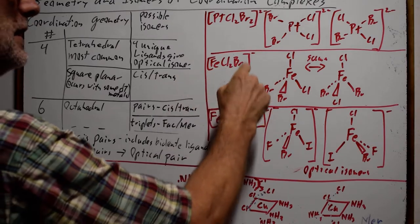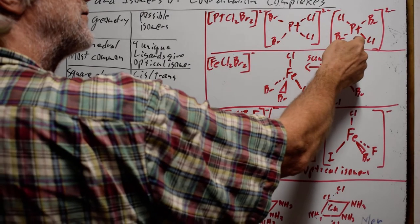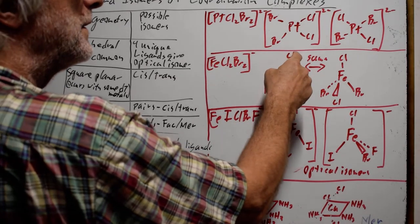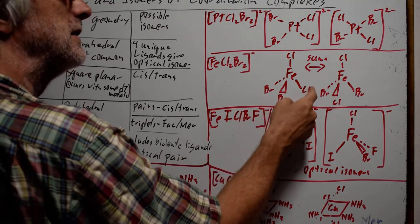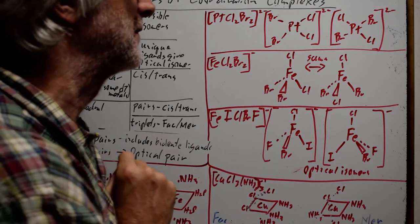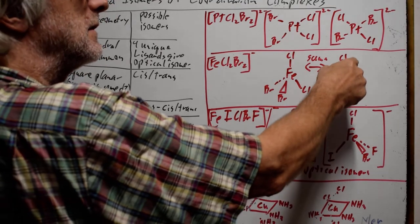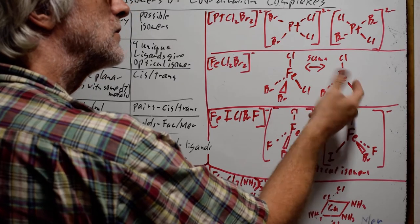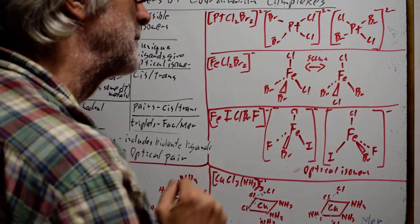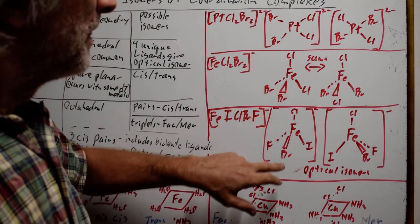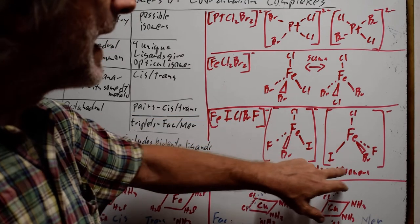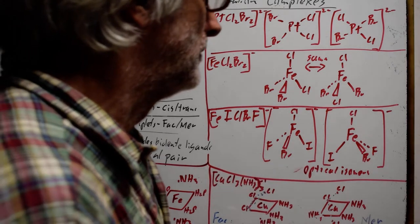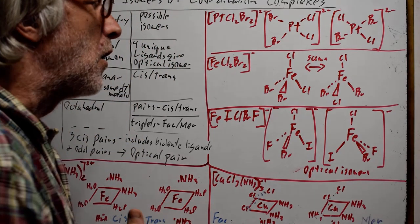For tetrahedral geometry versus square planar: square planar only has cis-trans as possible isomers. In tetrahedral, each position is cis to all other positions, so there is no possibility of cis-trans because there is no trans. The only isomer in tetrahedral is when we have four unique ligands, giving an optical pair. The traditional way of describing this uses a mirror image — if you can superimpose the mirror image it is identical; if you cannot, you have optical isomers, which we call chiral molecules. If looking from above you find the sequence going clockwise versus counterclockwise — a spiral — then we know there is an optical isomer.